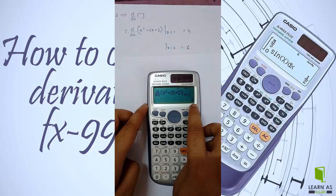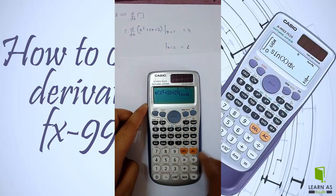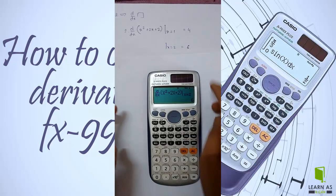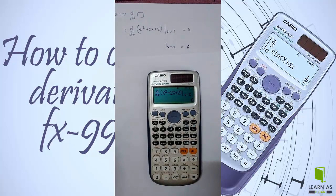Similarly, you can calculate for x equals 2, which gives 6. This is how you use the d by dx function on your calculator.